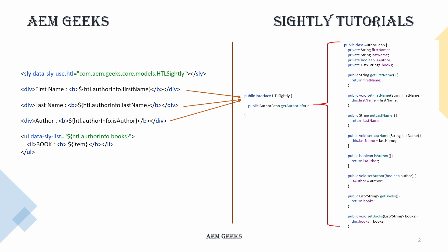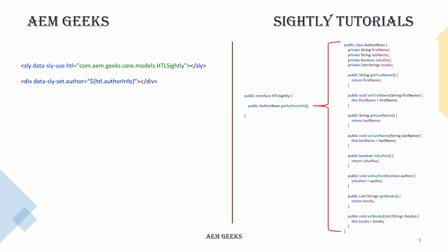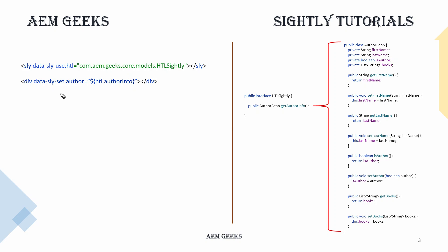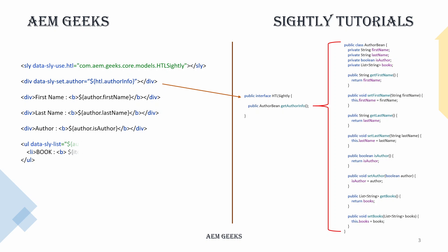With data-sly-set I declare an identifier or variable which holds the object of the author bean. This whole object will be stored in the author variable or identifier. So what happens: when it prints the first name, it goes to the Sling model, calls that method, gets the object, and stores it in the author variable. When I then want to print the author's first name, I use that variable set using data-sly-set.